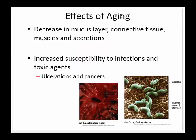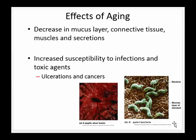As we age, things are going to slow down. We'll see an overall decrease in mucus production, changes in connective tissue, decreased muscular contractions, and diminished ability to digest food appropriately. We're also more susceptible to infection, toxins, cancers, and ulcers. Ulcers occur when a bacteria called Helicobacter pylori eats away at the mucus lining of the stomach and exposes the wall to hydrochloric acid, which can be very dangerous.